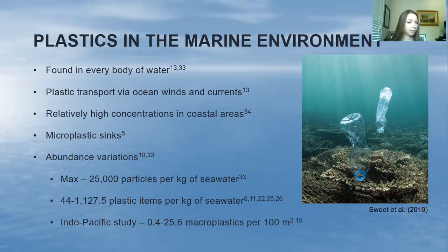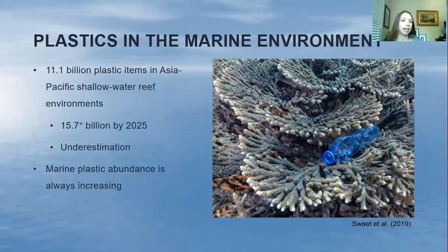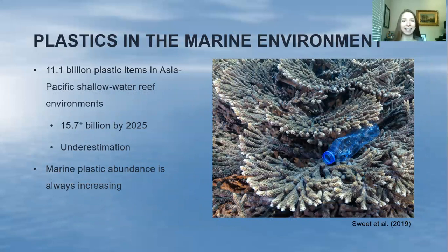One study in the Indo-Pacific looking at macroplastics larger than 55 millimeters in length — remembering that macroplastics are technically anything greater than 25 millimeters — found 0.4 to 25.6 macroplastics per 100 meters squared. Overall, in the Asia-Pacific shallow water reef environments, which are home to 55.5% of the world's coral reefs, there have been abundance estimates of 11.1 billion plastic items. This is the study that excluded data from China and Singapore, so it's likely an underestimation.